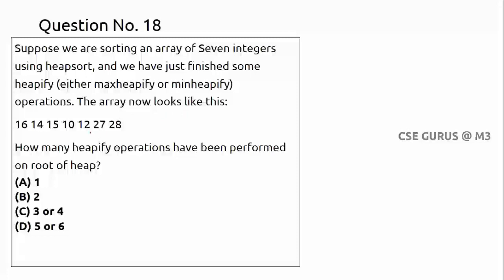After some heapify operations the array looks like a given state. To find how many operations have been performed, observe the last elements. The elements at the end are 28, 27, 12, 10 — in descending order. Descending order at the end means max heapify was performed. If increasing order, it would be min heapify.